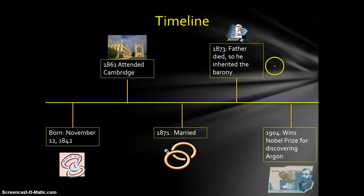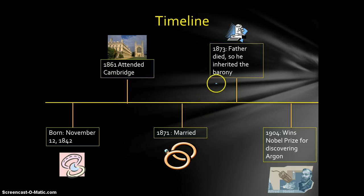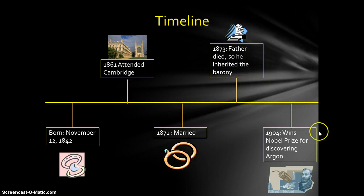Here is an overview timeline of his life: he was born November 12th; he attended Cambridge in 1861; in 1871 he got married and discovered Rayleigh scattering; in 1872 he got rheumatic fever and had to move to Egypt; in 1873 his father died; and in 1904 he won the Nobel Prize for discovering argon.